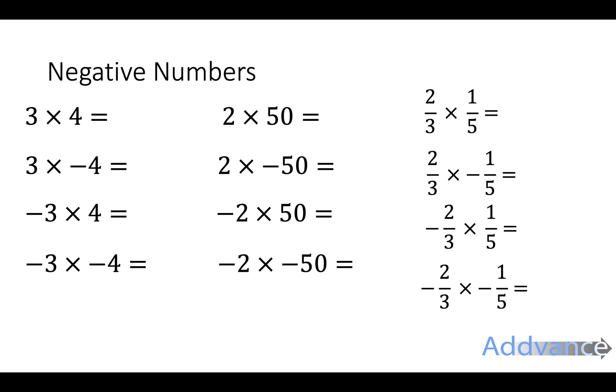Let's see these rules in action. 3 times 4 is 12. So, 3 times minus 4 is minus 12. Minus 3 times 4 is minus 12. Minus 3 times minus 4 is a negative times a negative, which is a positive 12.